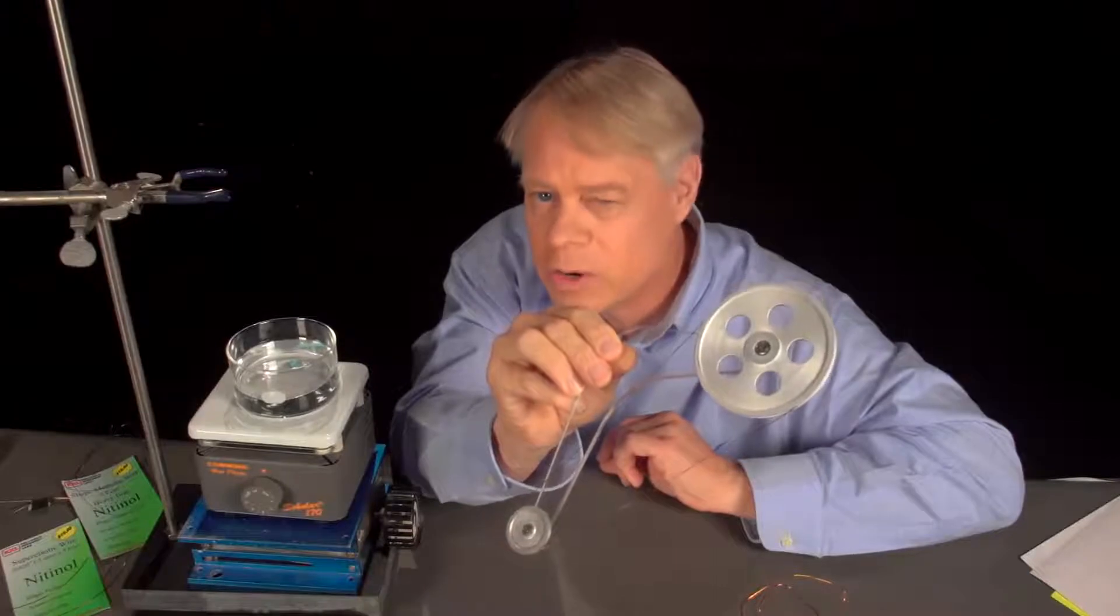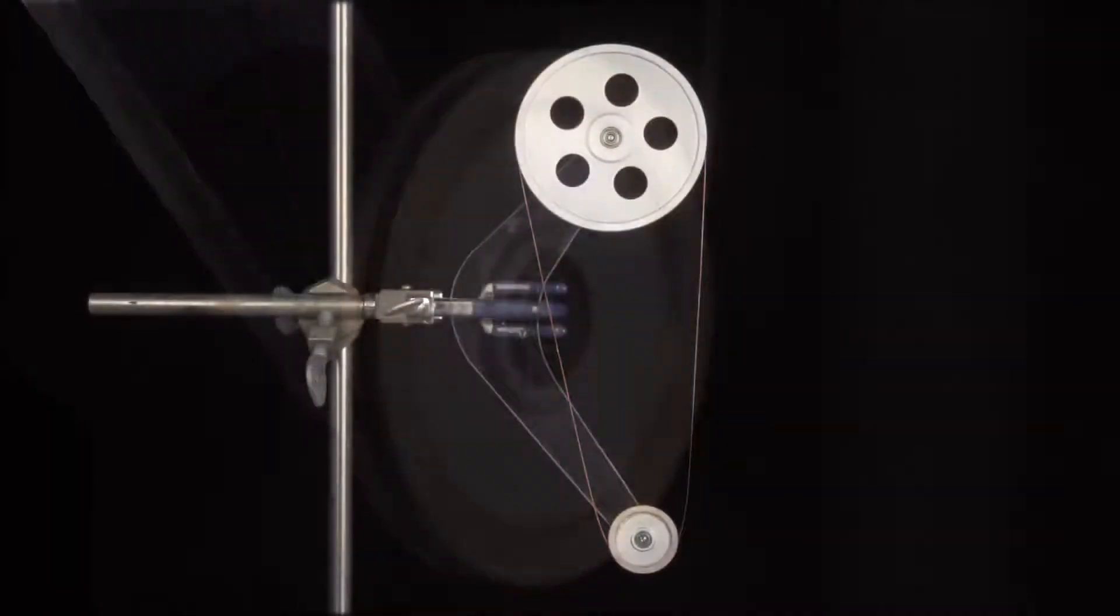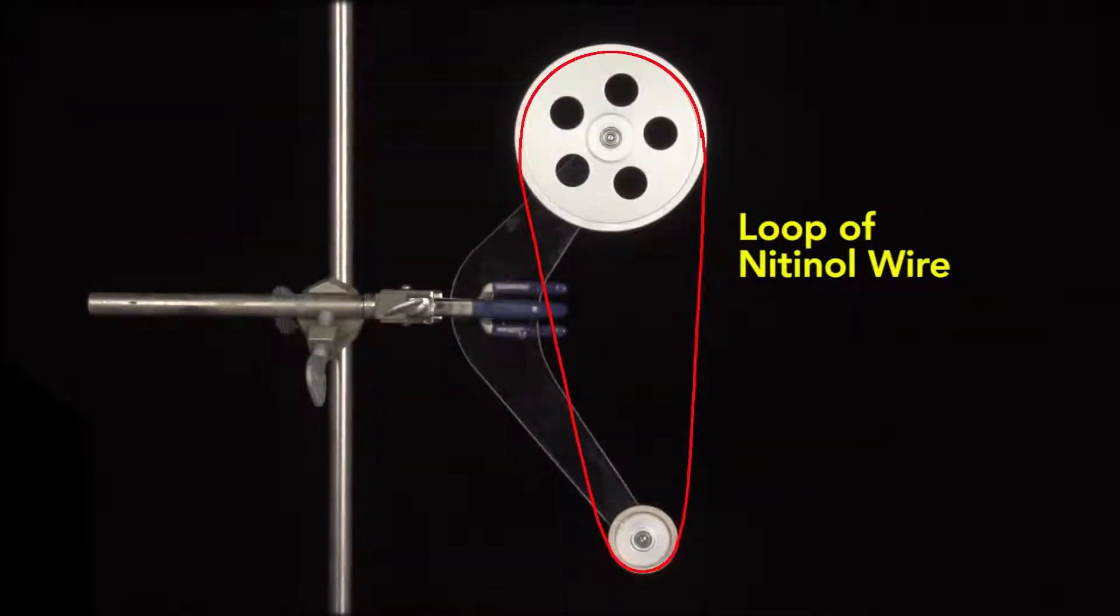There are some clever uses for nitinol. For example, this device has fascinated me since childhood. It's a type of engine. Its construction is very simple: a large and small wheel, each grooved on their side, with a loop of nitinol wire that runs through the grooves and connects them.